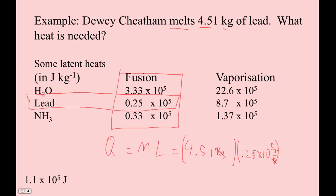So 4.51 times 0.25e to the fifth. Your calculator won't snicker at you if you type it in like that. And I get 1, 1, 2, 7, 5, 0. My calculator very unhelpfully tells me this, and I have to figure out my scientific notation myself. 1, 2, 3, 4, 5.